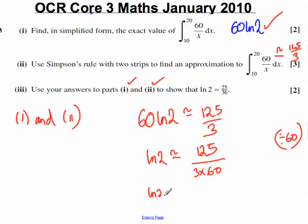So ln 2 is approximately equal to 125 over 180. Cancelling down that fraction, dividing by 5 top and bottom, we would get that ln 2 is approximately equal to 25 over 36.